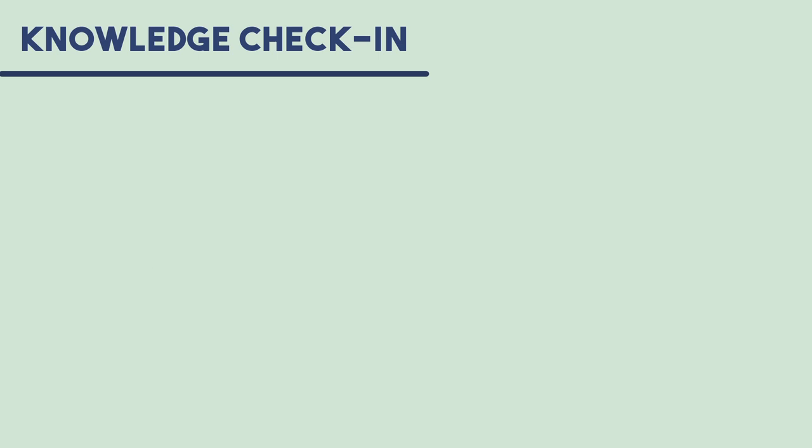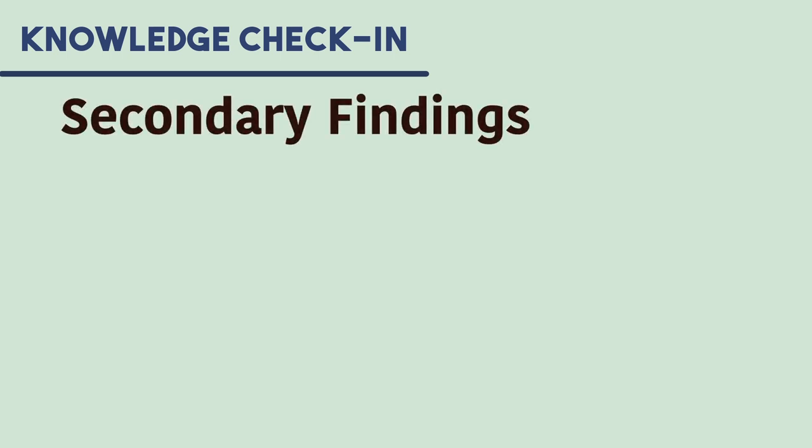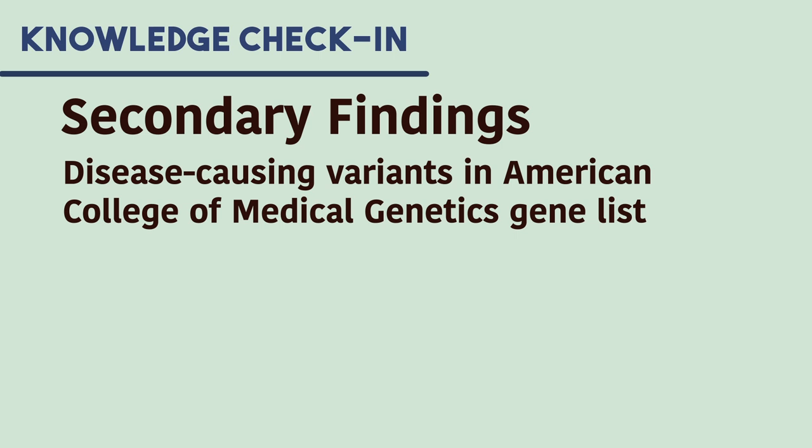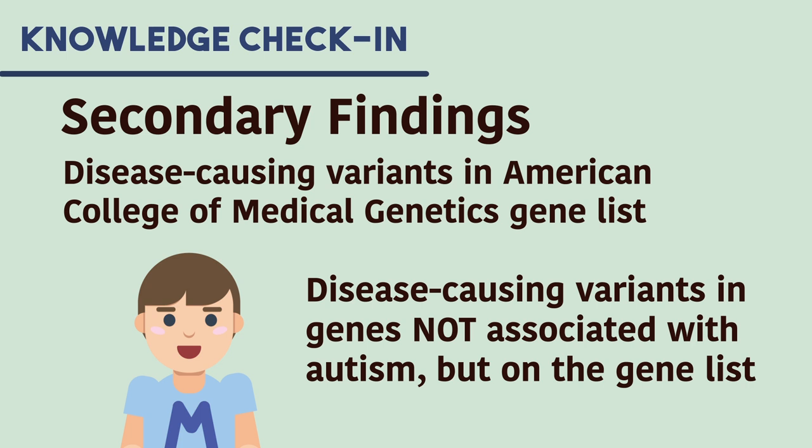The second type of result is a secondary finding. This type of genetic finding includes disease causing variants in the gene list by the American College of Medical Genetics. For our example with Michael, secondary findings would include disease causing variants in genes that are not associated with autism spectrum disorder but included in the gene list.